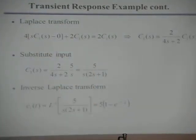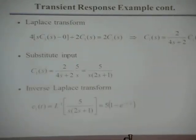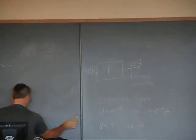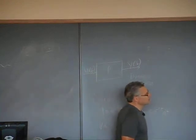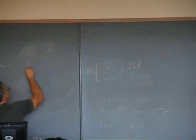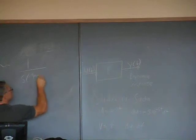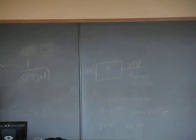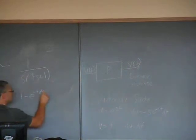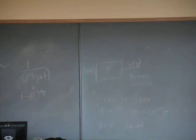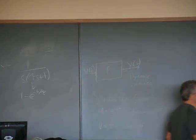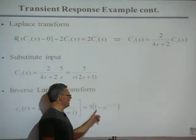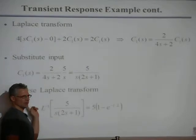There will be an entry in the table that says if you have a form that looks like this: 1 over s times tau s plus 1. It usually writes these terms, calls them tau s plus 1. Tau is a constant. The reason we call it tau is because it will soon have an interpretation of a time constant. It'll tell you the time domain function is e to the minus t over tau. This is directly from the table. In this case, tau is 2, so you get 5 times (1 minus e to the minus t divided by 2). That's the answer.